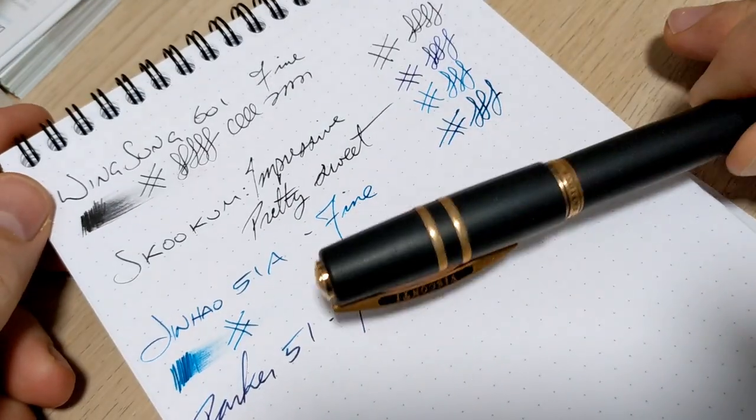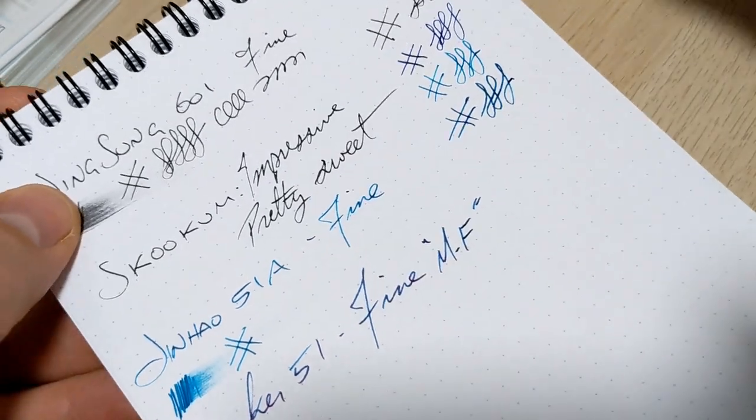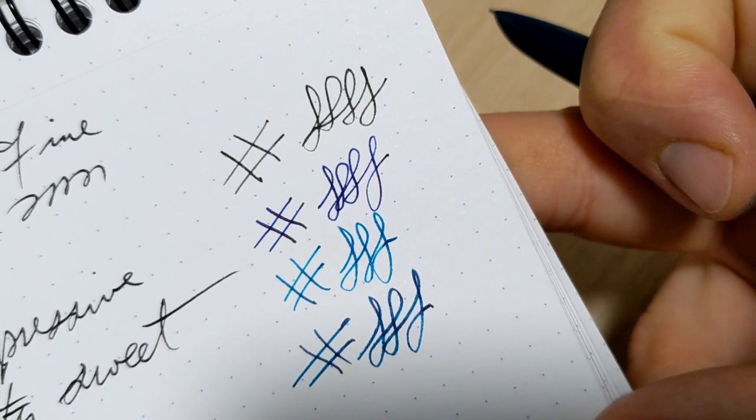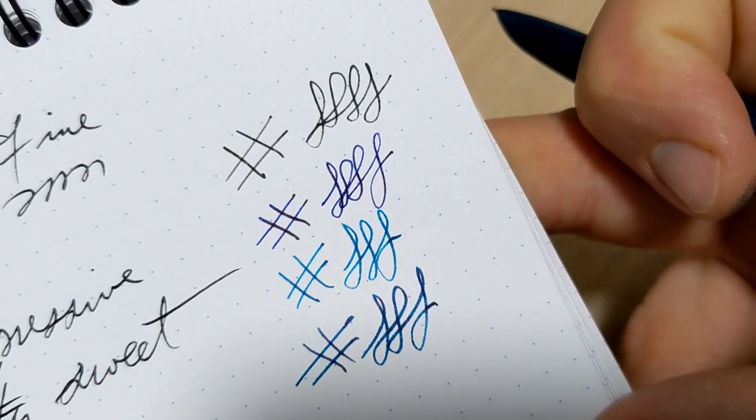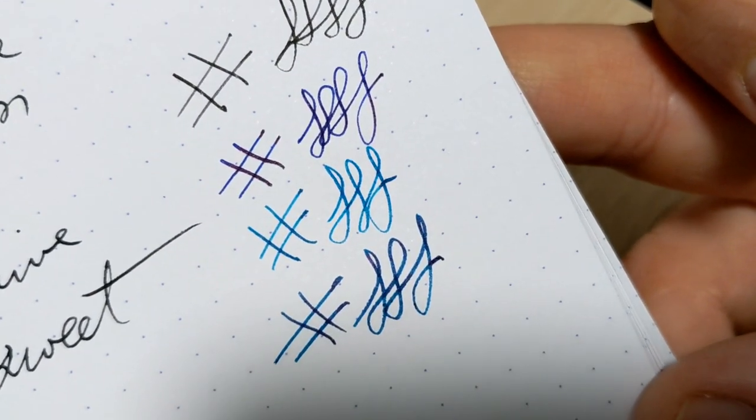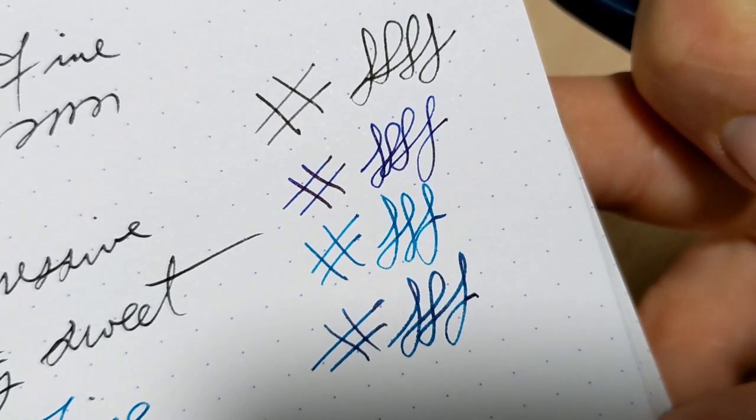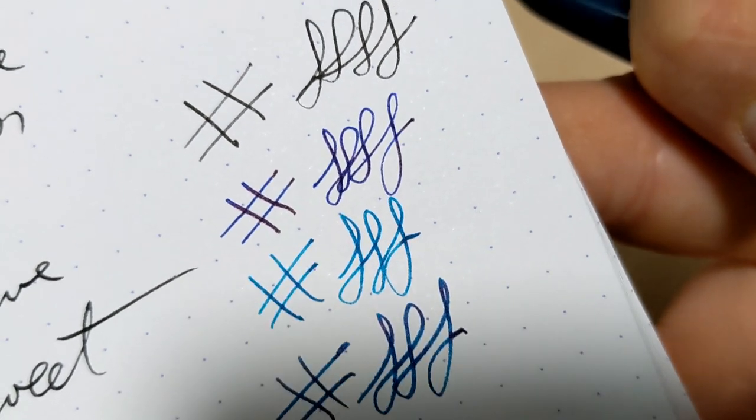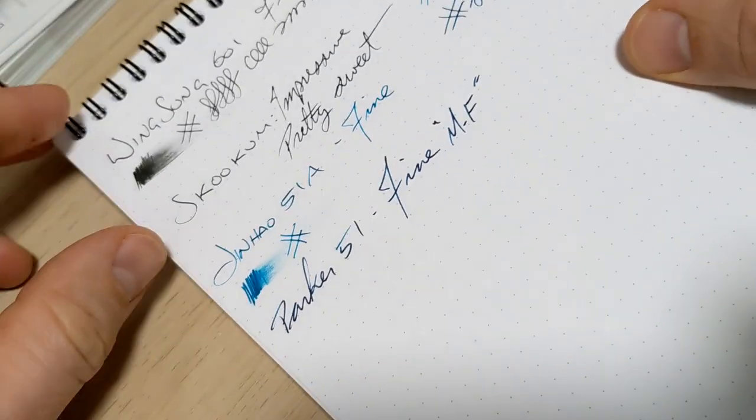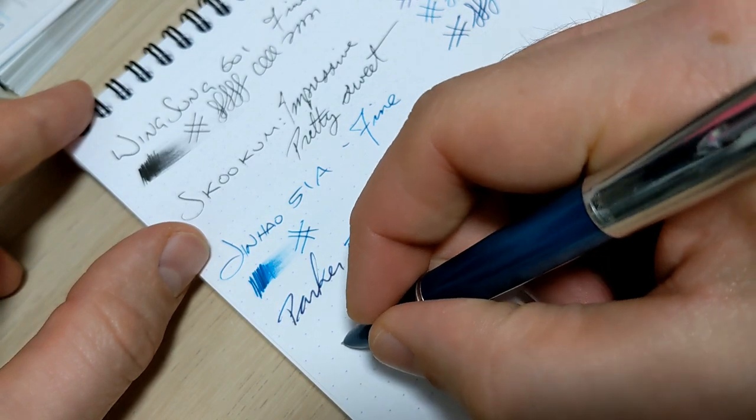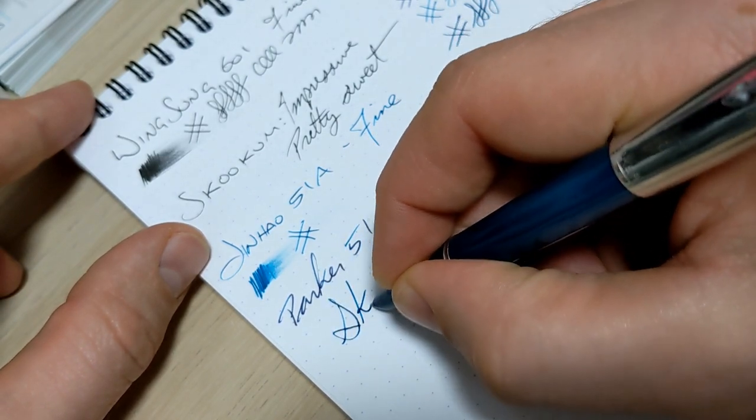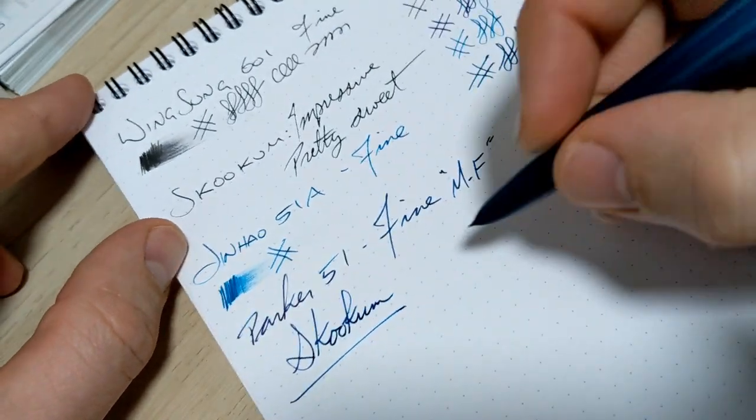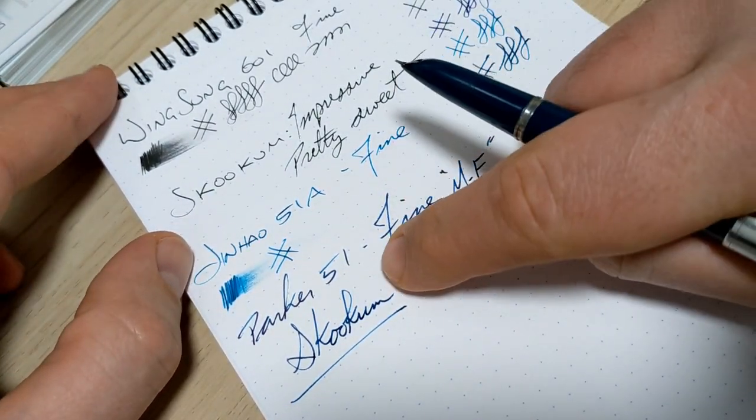This Visconti is supposed to be a fine, not even close. But of all the fine nibs I have this is definitely the smoothest. It's the widest of the bunch, just a touch wider than most fines. Let's finish up, how does it do with skookum? Pretty skookum. It's got a nice balance to it as well for wetness.